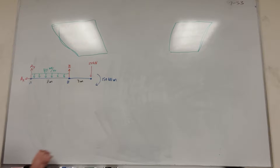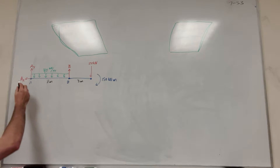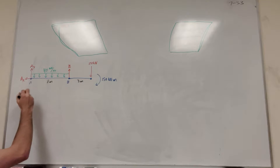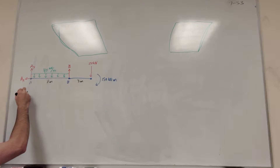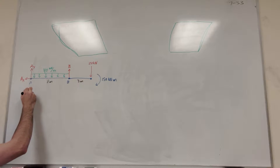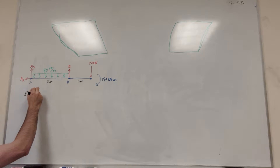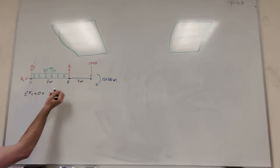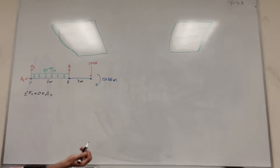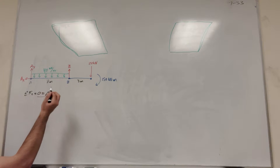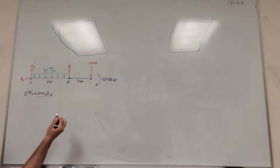So let's start with A of X. If we want to find A of X, we're going to take the sum of the forces in the X direction. We know it's equal to zero because we're in equilibrium, and A of X is the only thing that acts in the X direction, so A of X is equal to zero.